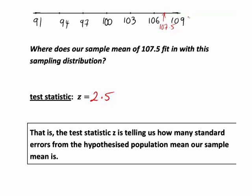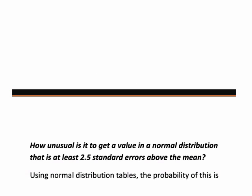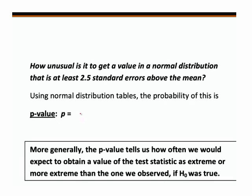The next question is: how unusual would it be to get a value that's at least 2.5 standard errors above the mean? We know that 95 percent of values in a normal distribution are within two standard deviations — or two standard errors — of the mean in a sampling distribution like this. So getting a value 2.5 standard errors from it does not seem a terribly common occurrence. We could work out the actual probability by looking at a standard normal distribution table.